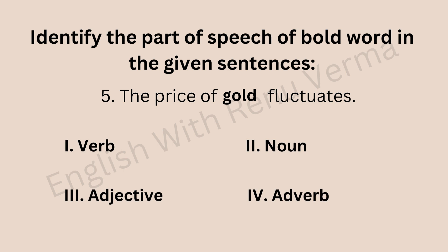Next: identify the part of speech of the bold word in 'The price of gold fluctuates.' Fluctuate means ups and downs. Here, gold is a noun — specifically a material noun. Material nouns refer to metals, substances, and things we cannot count individually. Gold falls in the category of material nouns, so gold is a noun here.